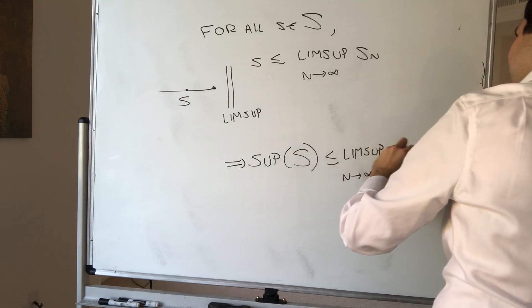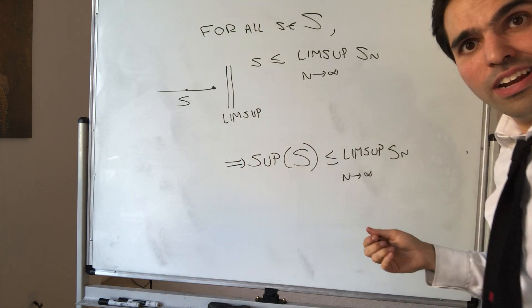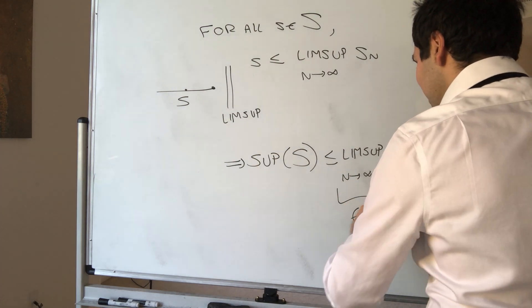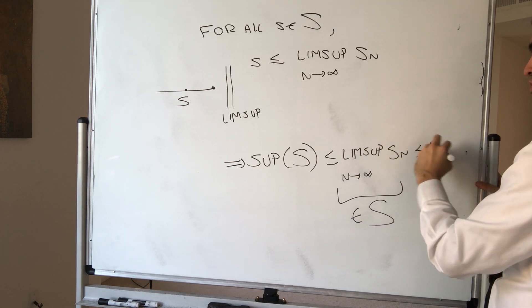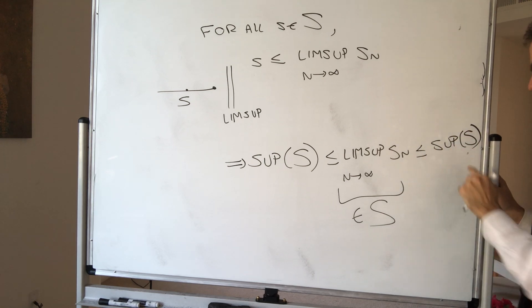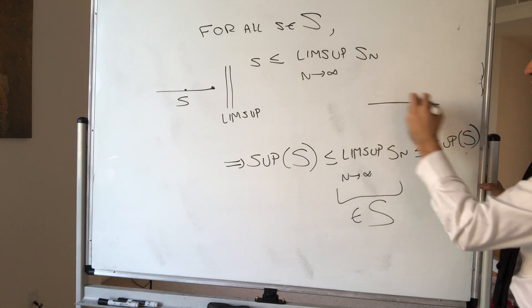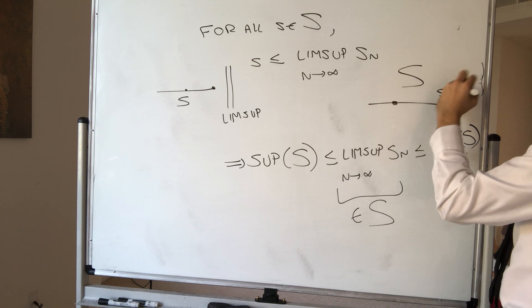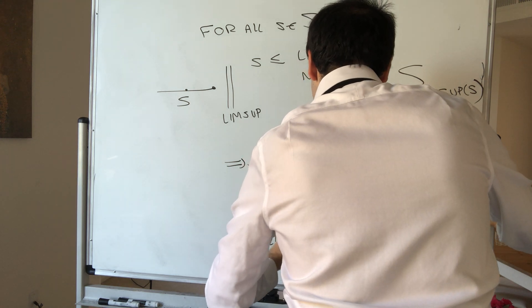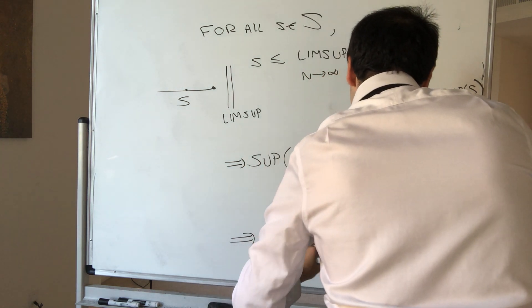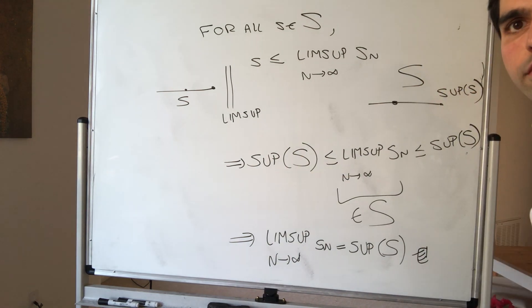But we also know from Fact 1 that limsup of Sn is itself in S. Any element of S is less than or equal to the supremum of S, so limsup of Sn ≤ supremum of S. Combining both inequalities, we conclude the supremum of S equals the limsup of Sn. Similarly, you can show the infimum of S equals the liminf of Sn.